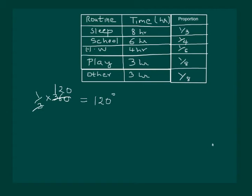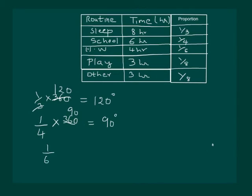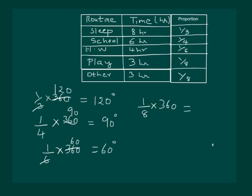Similarly, 1/4 of the circle means 1/4 of 360 degrees, which comes out to be 90 degrees. 1/6 of the circle is 60 degrees. And 1/8 of the circle comes out to be 45 degrees.